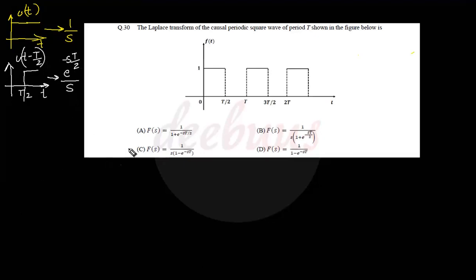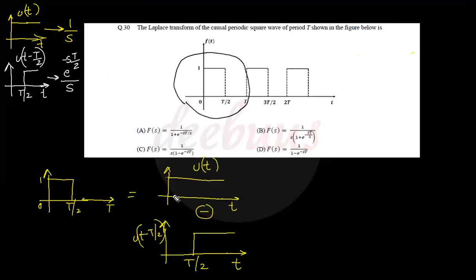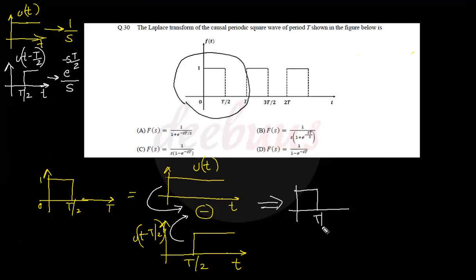Coming to the given signal: for a single period it can be split as a summation of two signals — u(t) minus u(t − T/2). Adding these two signals gives the original signal: from 0 to T/2 the value is 1, and after T/2 the value is 0. The Laplace transform of a single period is F₁(s) = 1/s minus e^(−sT/2)/s.